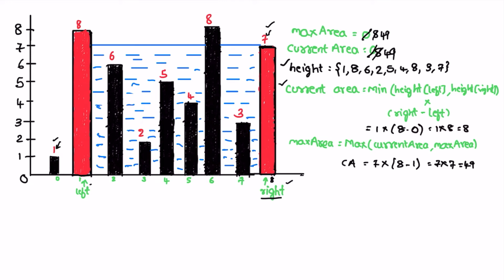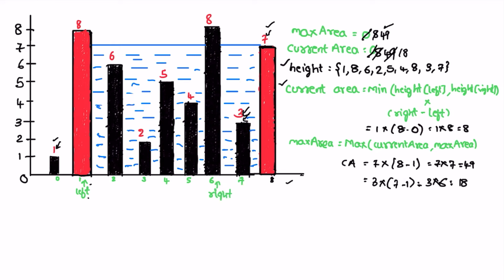To proceed further, we check the minimum of both heights, which is 7 at right, so we decrement right by one. Now right is pointing one step to the left. Current area: minimum is height of right, which is 3, times right minus left (7 minus 1), equals 3 times 6, equal to 18. Max remains 49. In the next iteration, we decrement right again. Both heights are equal at 8, so we can pick either; current area is 8 times 5 equals 40. Max remains 49.